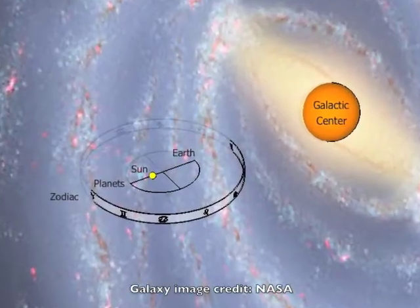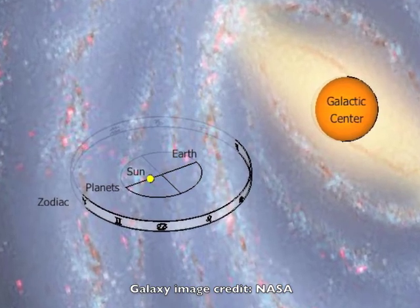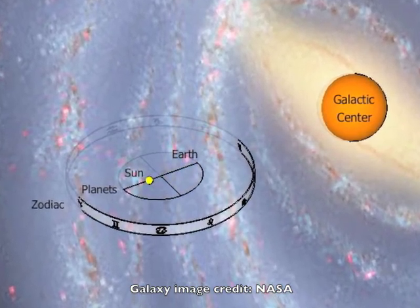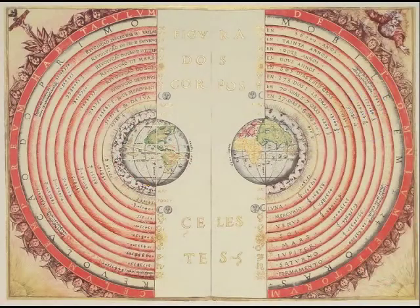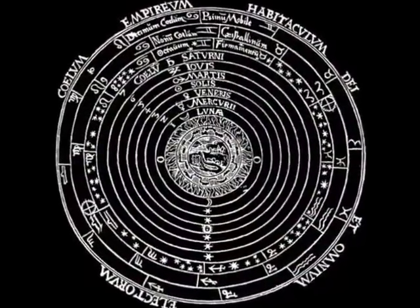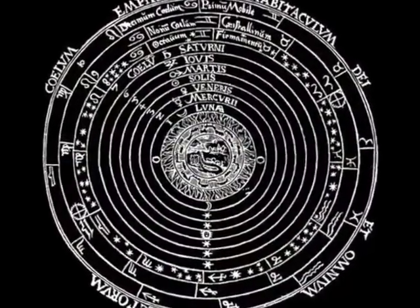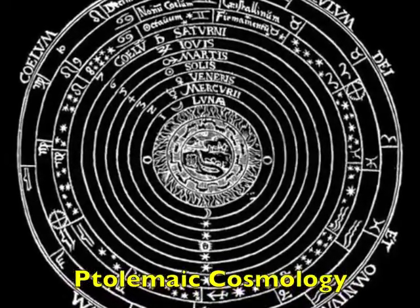Imagine beginning a journey outside the galaxy, flying through the zodiac, passing by each one of the visible planets, and stopping on earth for a while. After a short stay you begin the journey home, traveling out past the planets, through the zodiac, and on toward the center of the galaxy. This route describes the mystical journey of the soul. It is mirrored in the Ptolemaic or geocentric cosmology that predated Copernicanism.